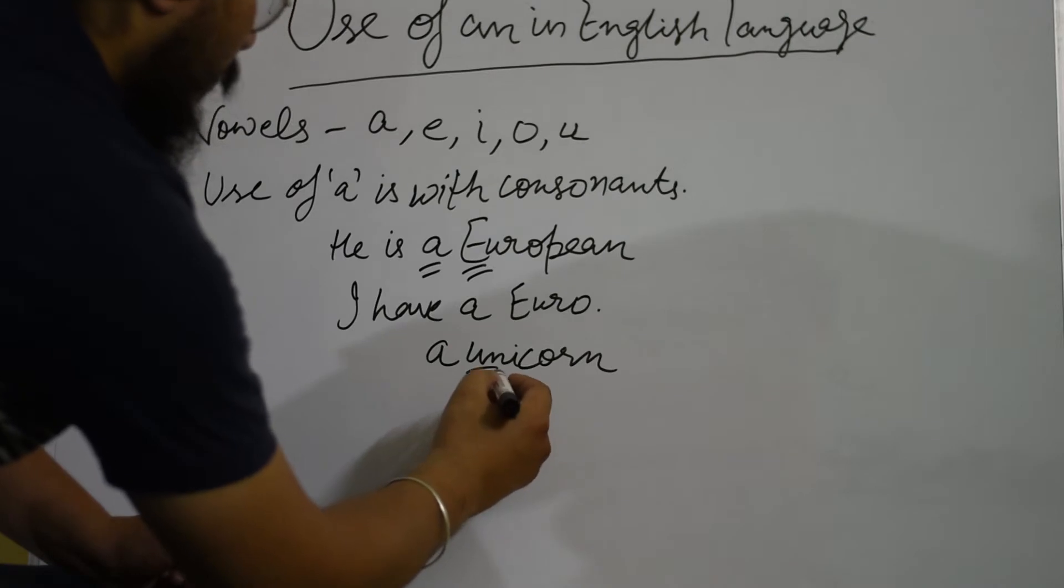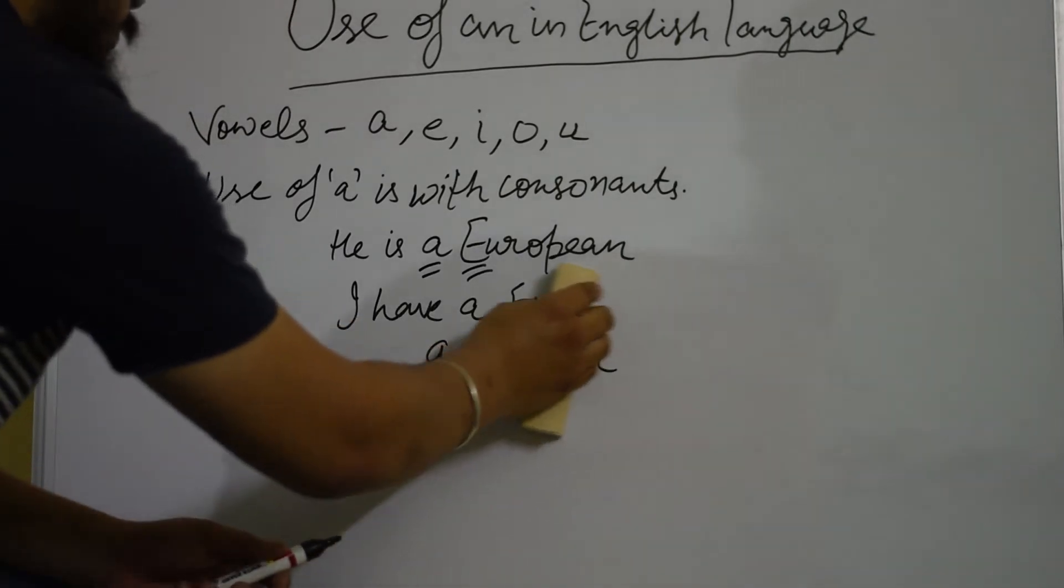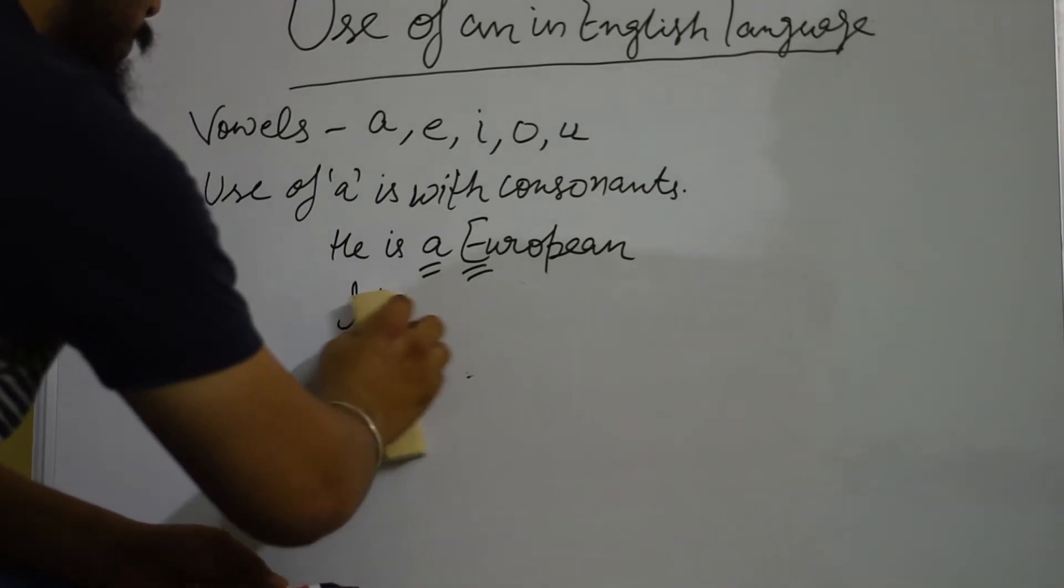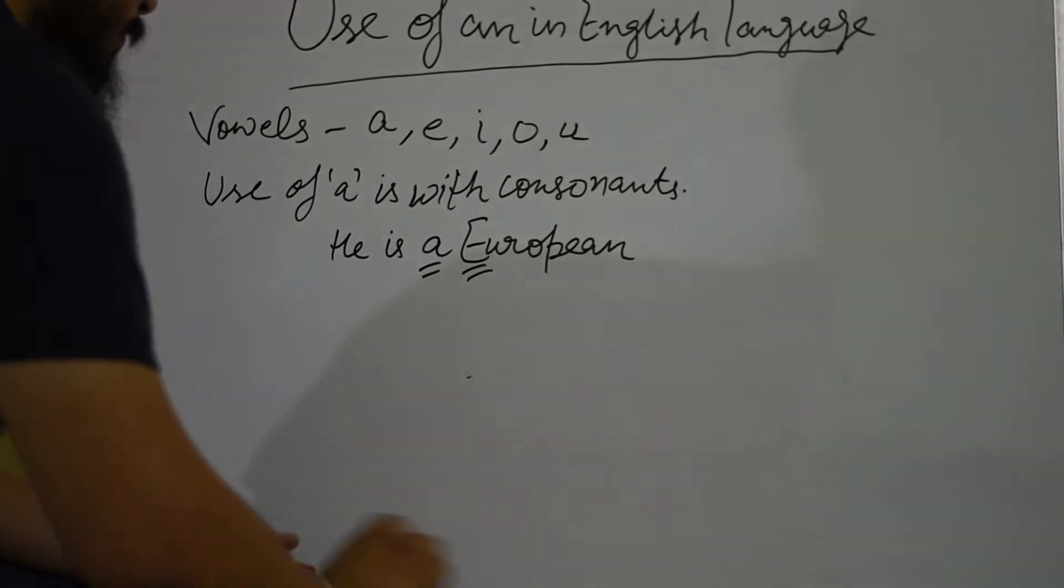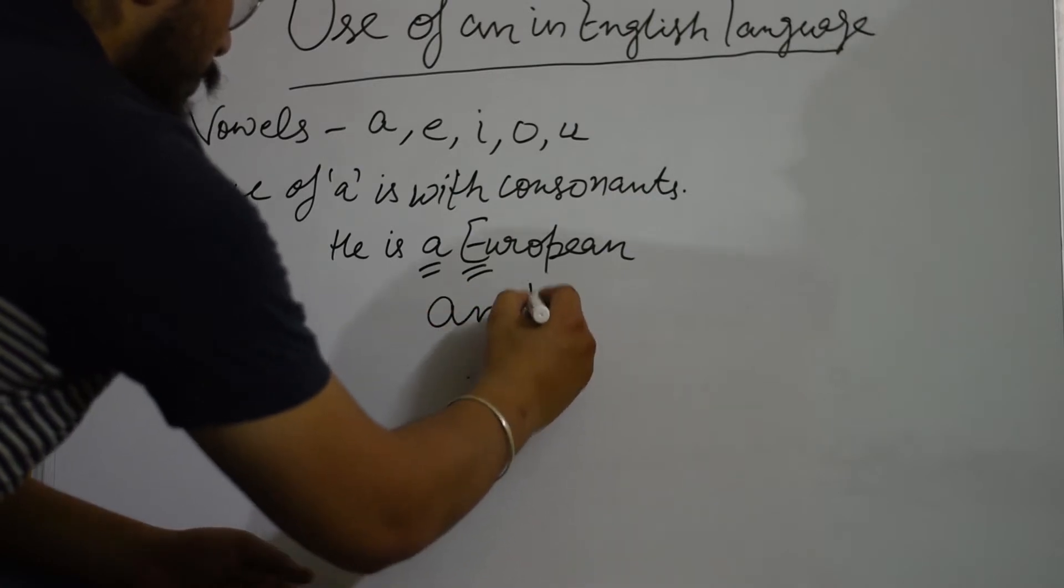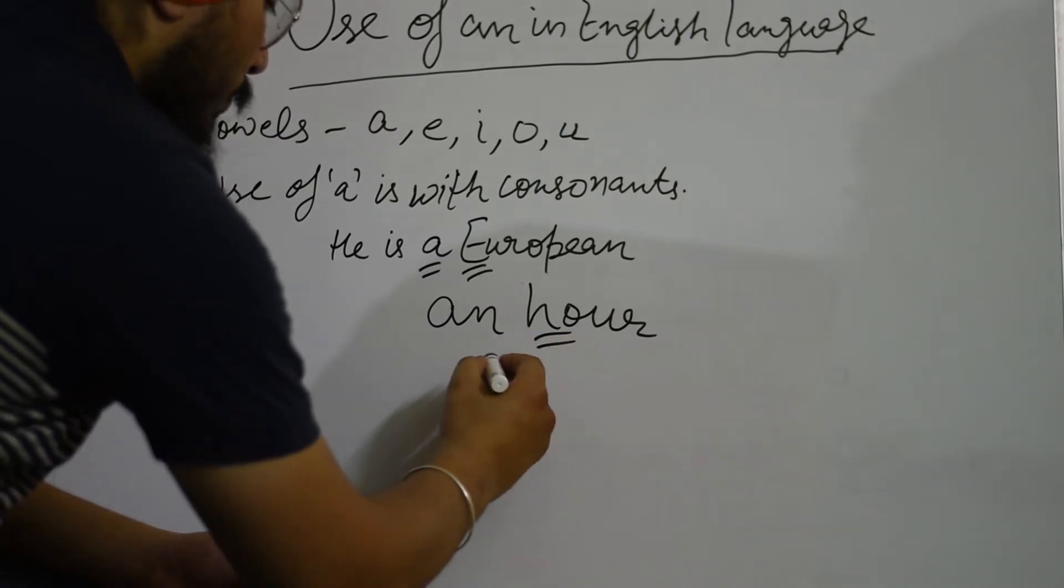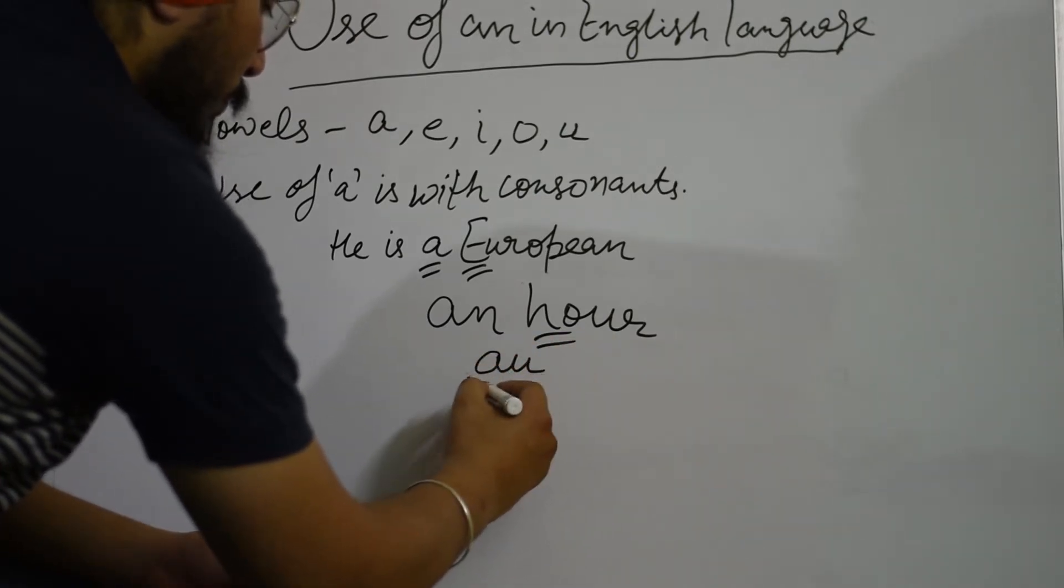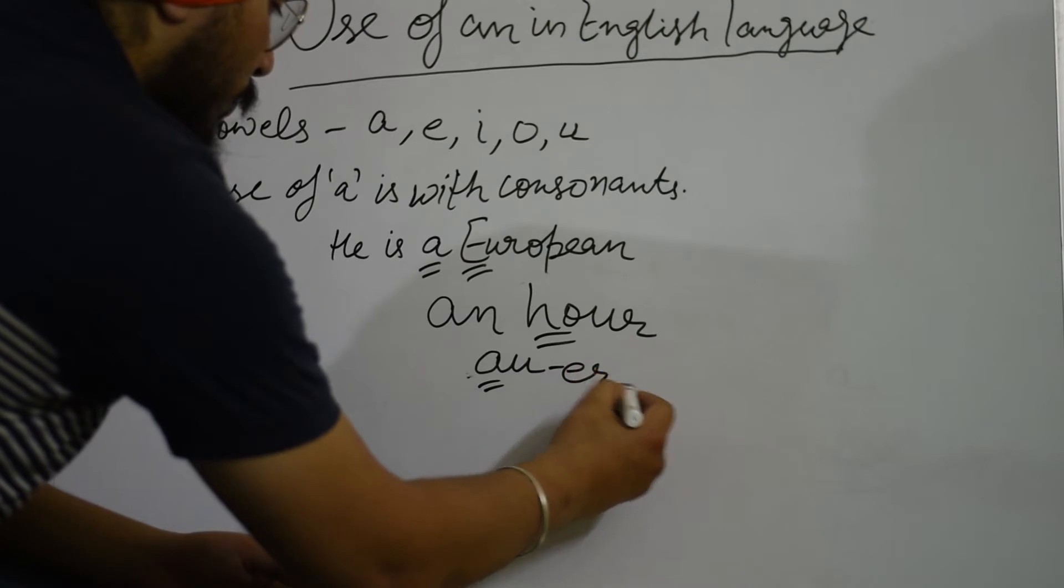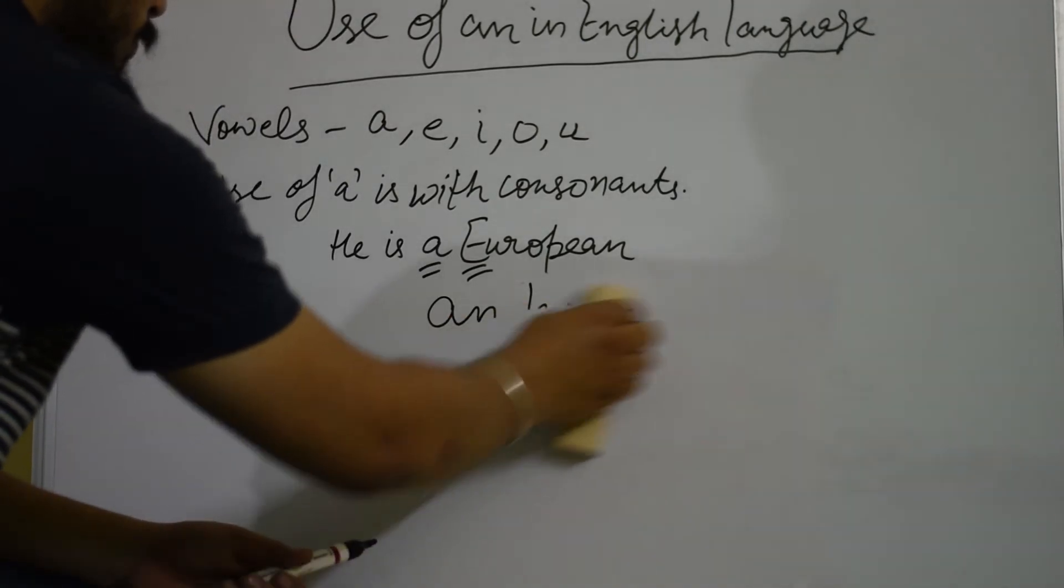In sentences like 'he is wearing a uniform', we still use 'a'. But we use 'an hour' because the initial sound is 'our' sound.